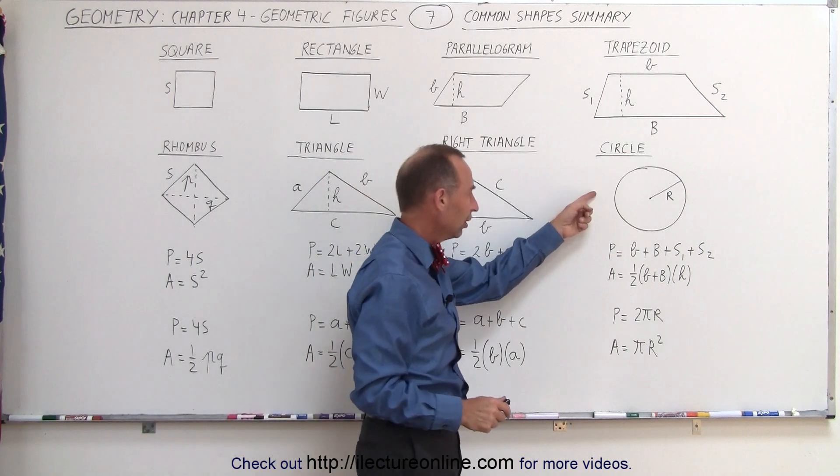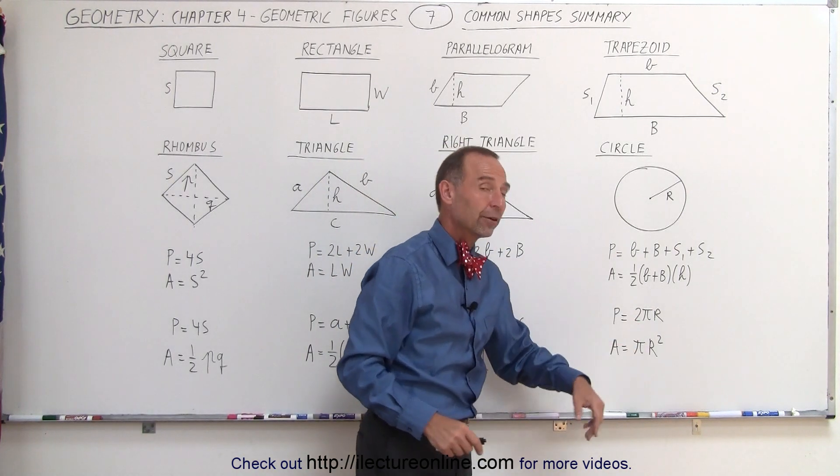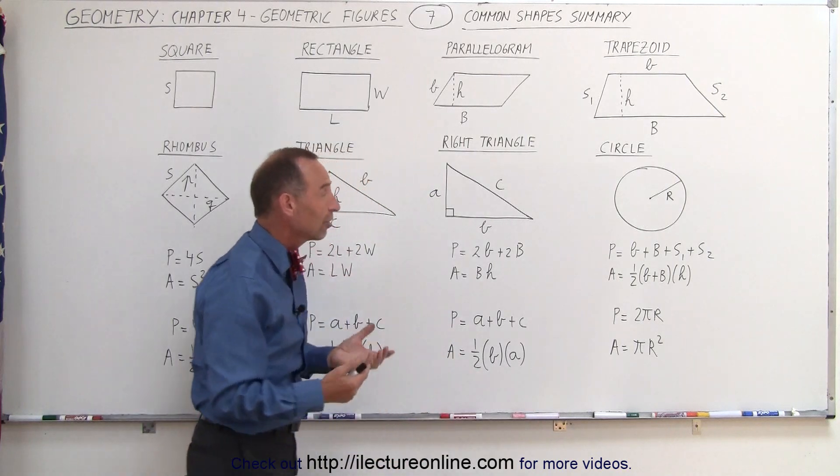And finally, the circle. The perimeter is 2πr, and the area is πr². For a circle, all you need to know is simply the radius.